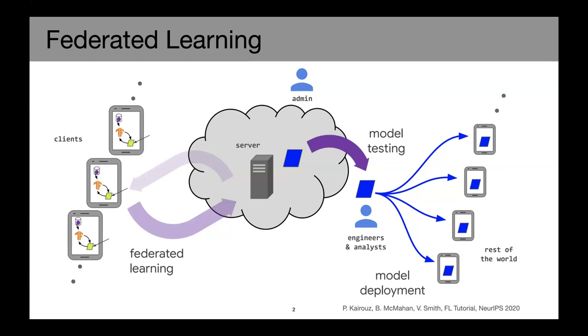Just a little bit of background on federated learning. In federated learning, the data are stored at the client sites, say local devices or local silos, rather than collected to be a centralized data set. And then the clients communicate with the server to jointly train a model based on their local data. After that, the model is deployed for the rest of the world for any downstream test.